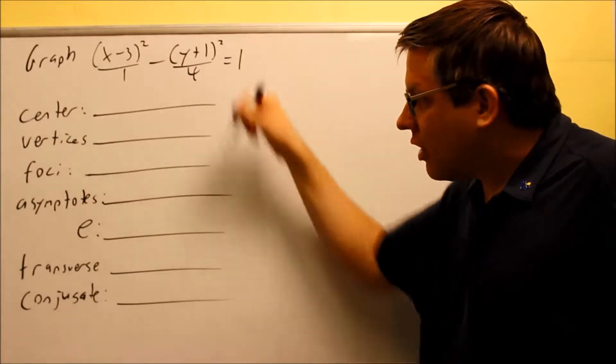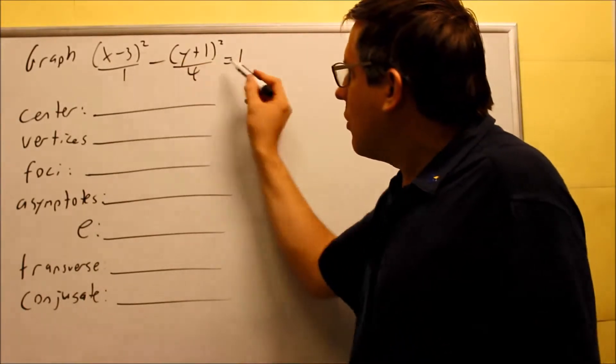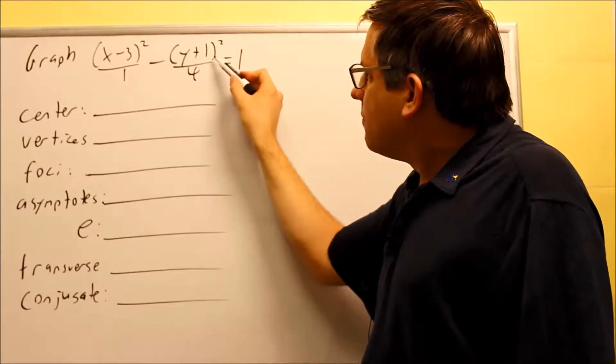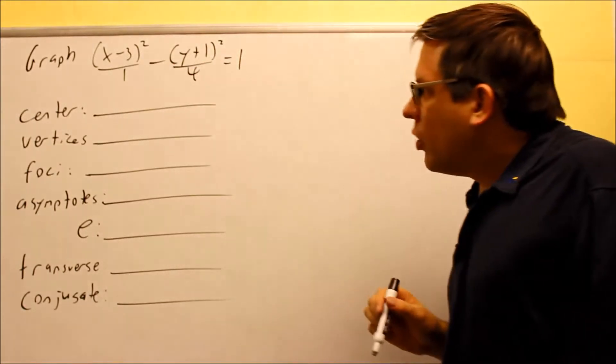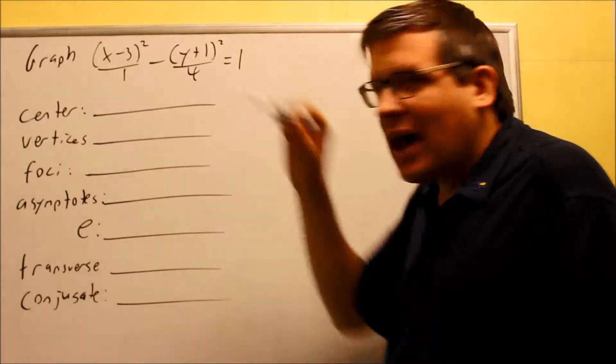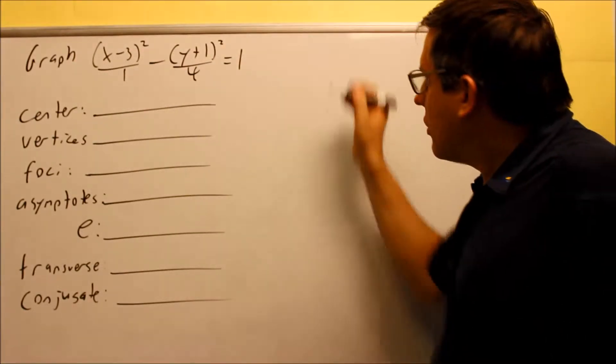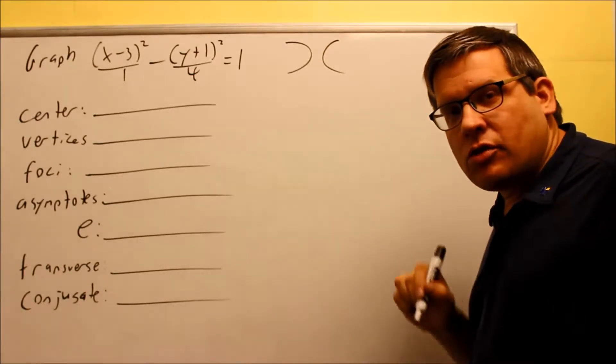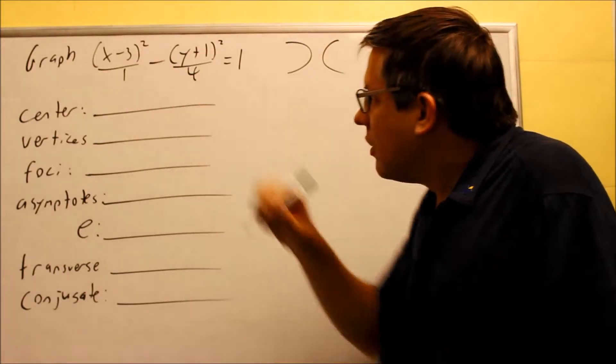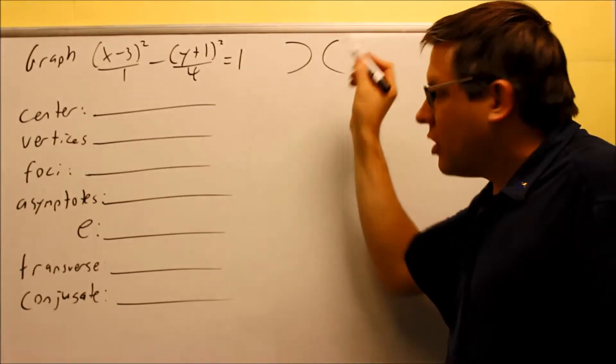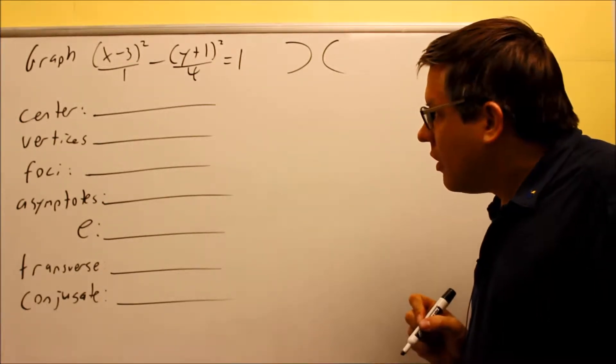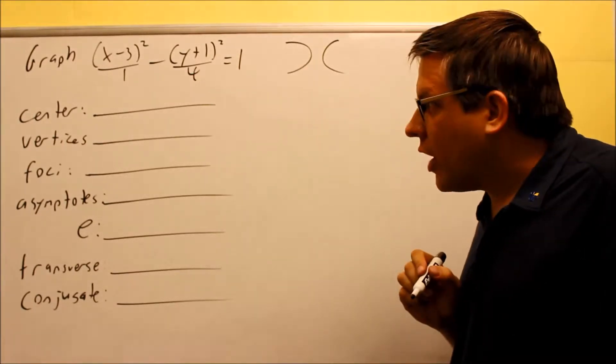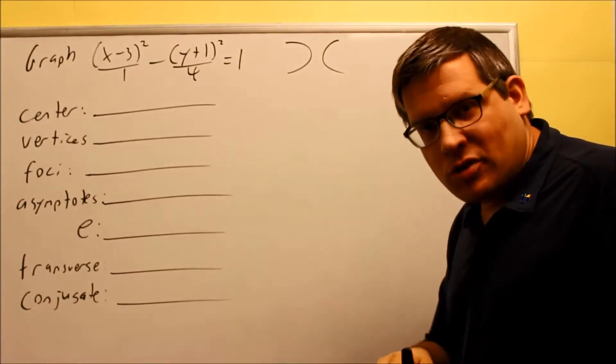So you should take a look at those before you watch the rest of this video. It might make more sense if you have the background or the formulas that go along with it. So with that, let's go ahead and work through this problem. Now, it's already written in the proper form. I've got a quantity squared and a quantity squared here. And what this tells me is that since the X comes first, this tells me that the hyperbola is going to open up to the left and to the right. So again, if the X comes first, it opens up sideways.